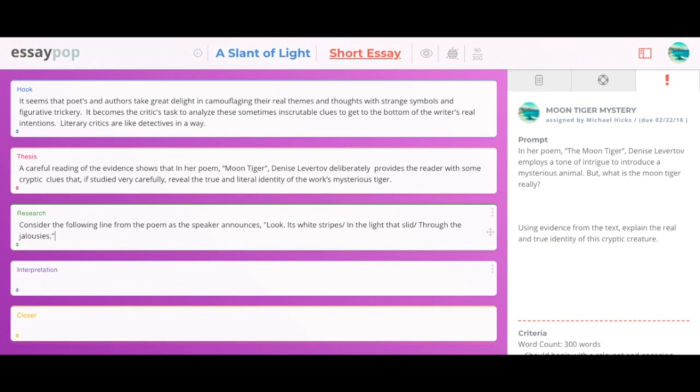So in this situation, I will use a quote from the poem itself. Now the research box can be used for statistics, proof, anecdotes, any kind of evidence, but again for this one I'm going to be using a quote from the text. Consider the following line from the poem, as the speaker announces: look its white stripes in the light that slid through the jalousies. So now that I have this proof, I will go on later in my interpretation box to explain what that all means.